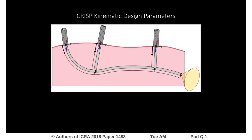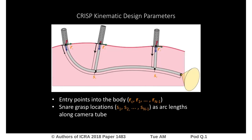We consider the optimization of a set of kinematic design parameters for the CRISP robot that are set prior to the surgical procedure. These parameters include the entry points where the tubes are inserted into the patient's body, as well as the snare grasping locations which dictate the parallel structures of the CRISP robot inside the body. It is important to consider these parameters as they can greatly affect the ability of the robot to visualize patient anatomy.